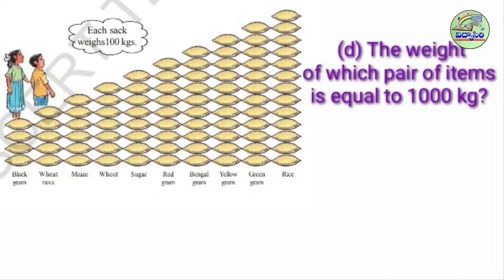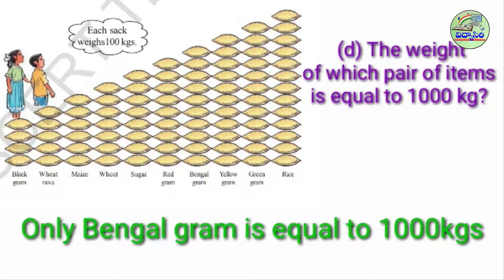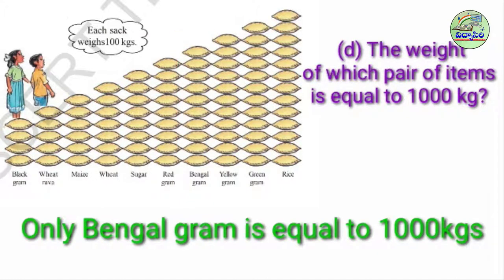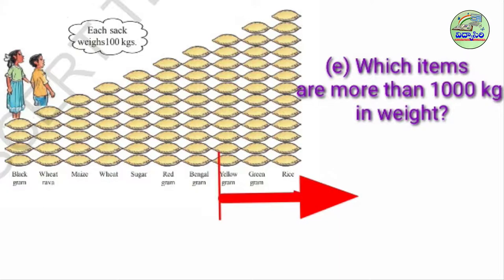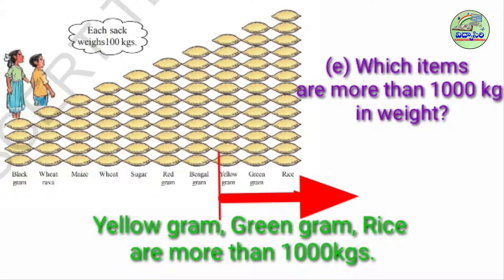I will give you another question that is very easy. The weight of which items is equal to 1,000 kgs? We already know only bengal gram is equal to 1,000 kgs. Observe carefully children. Next question E: Which items are more than 1,000 kgs in weight? More than 1,000 kgs — observe children carefully: yellow gram, green gram, and rice are more than 1,000 kgs.